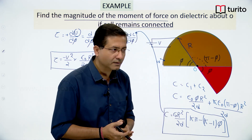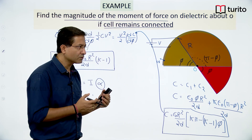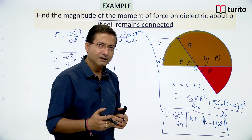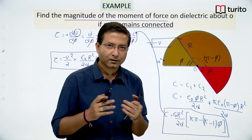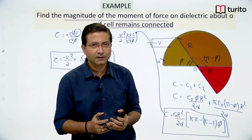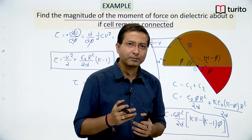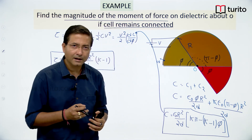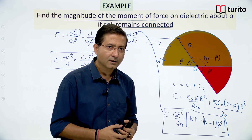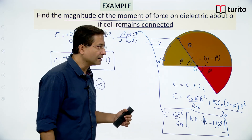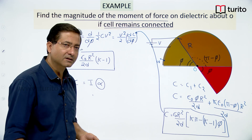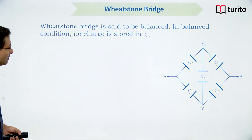If series-parallel combination is not found and no conducting wire is present, then we check for the Wheatstone bridge configuration. This is the three-step approach for solving circuits. If the circuit is simple, we directly apply Kirchhoff's law. For more complex circuits we follow: first series-parallel, then conducting wire, then Wheatstone bridge.